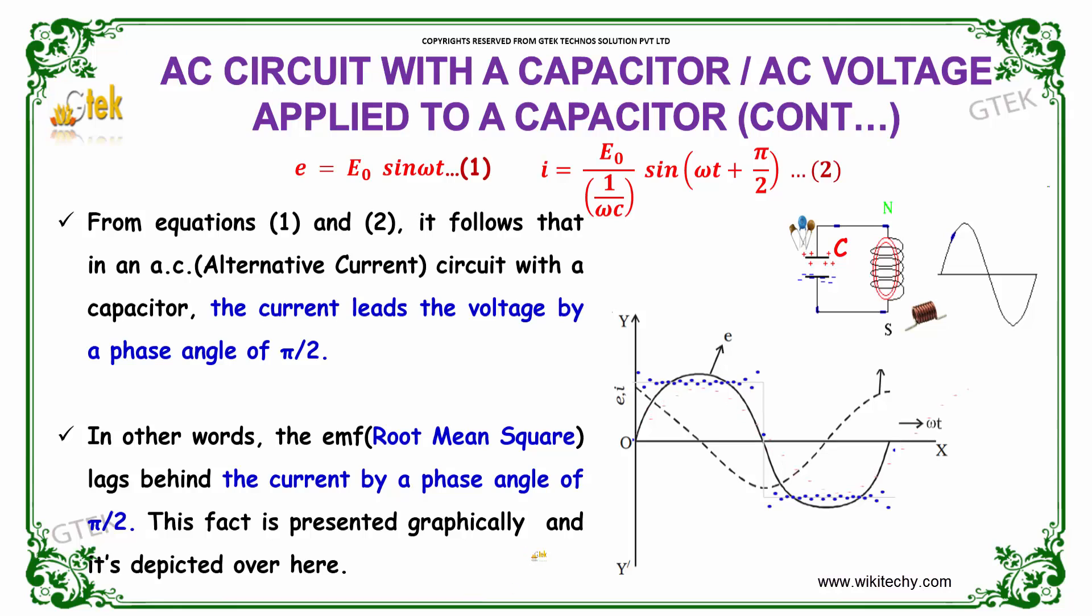As indicated, we got two equations: E equals E0 sin ωt and I equals E0 divided by 1 by ωC into sin(ωt + π/2). From these two equations, we are able to get the current.